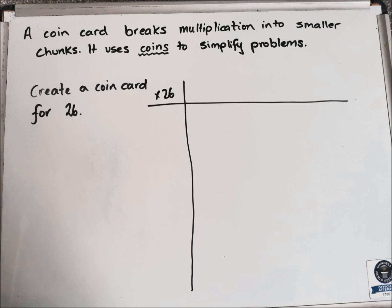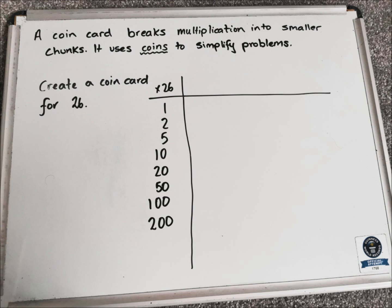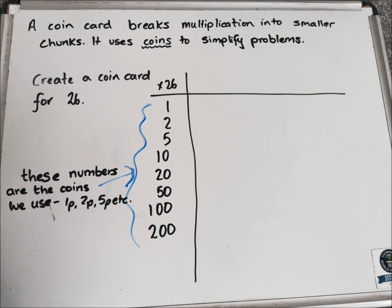we would draw a grid out similar to this. We think about the coins that we use in everyday life: we have 1 pence, 2 pence, 5 pence, 10 pence, 20 pence, 50 pence, a 1 pound coin, and a 2 pound coin. So we write these numbers down the side, because these are the coins that we use. And that is where the strategy gets its name: coin card.